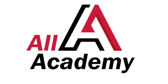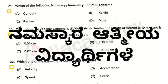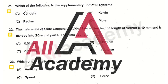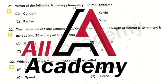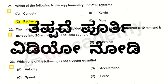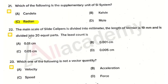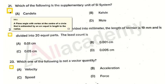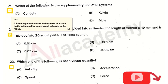The next question in the applied science section is: which of the following is a supplementary unit in the SI system? The right answer is option 3, that is radian. A radian is a plane angle with a vertex at the center of a circle, subtended by an arc equal in length to the radius.